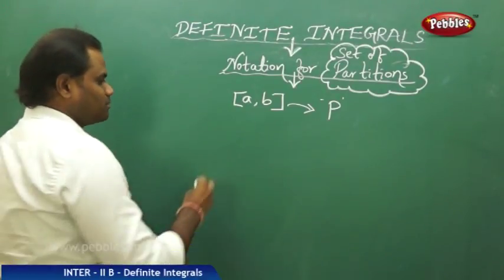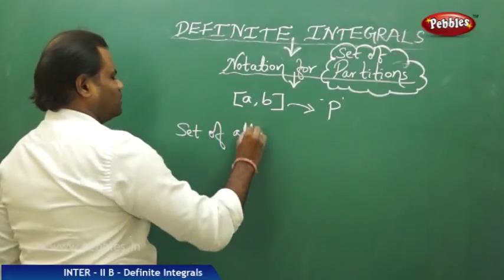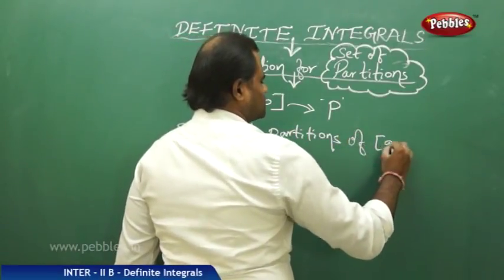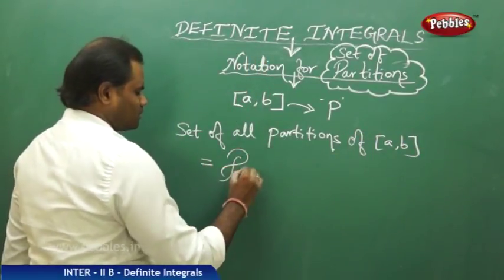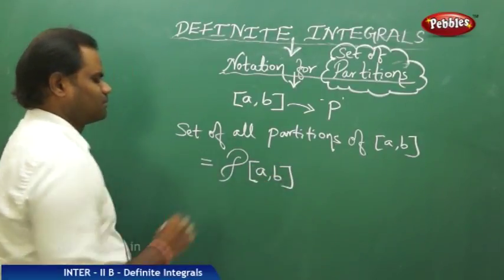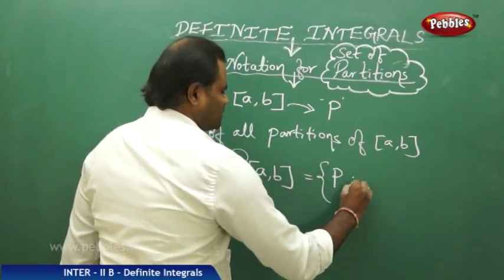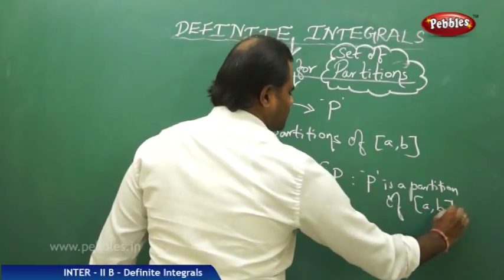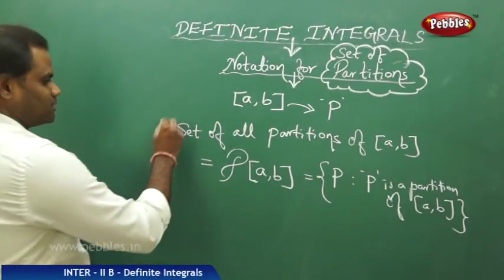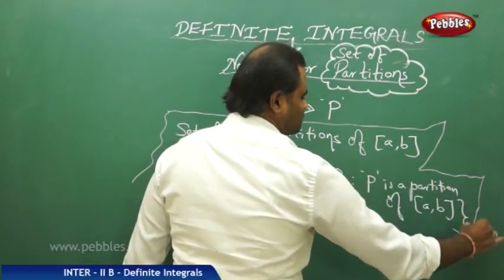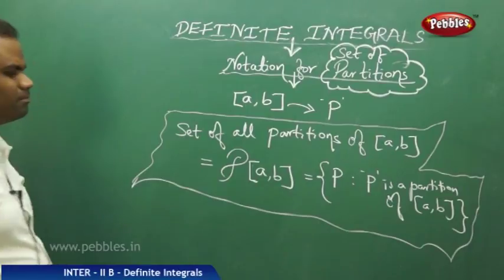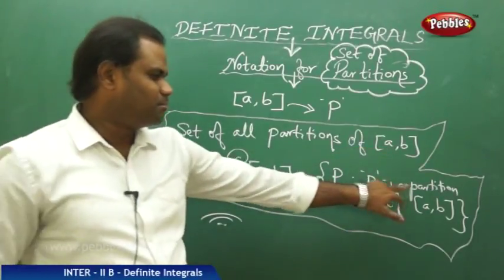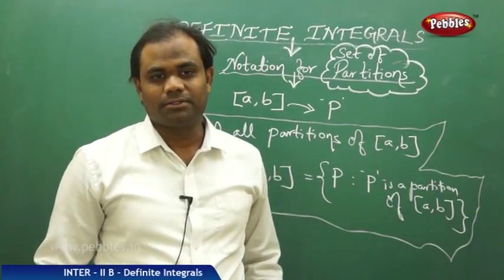The set of all partitions of [a, b] is denoted by P(a, b), and it is defined as the set of all P such that P is a partition of [a, b]. This is how we define the set of all partitions of the closed interval [a, b], denoted by P(a, b).